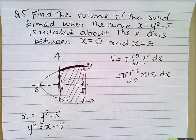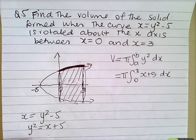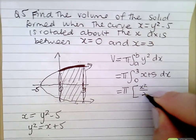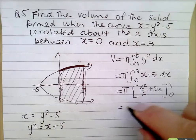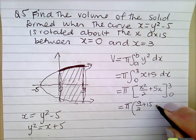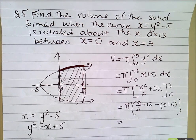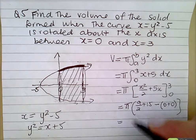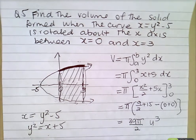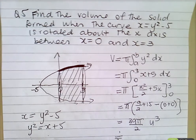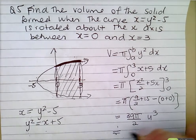You don't need to go and make y the subject and square it — y squared is already x plus 5. Keep pi out the front and integrate: you get x squared over 2 plus 5x between 3 and 0. That gives pi times 9 over 2 plus 15, which is 4.5 plus 15 equals 19.5, which is 39 over 2. So the answer is 39π over 2 units cubed, approximately 61.3 units cubed.